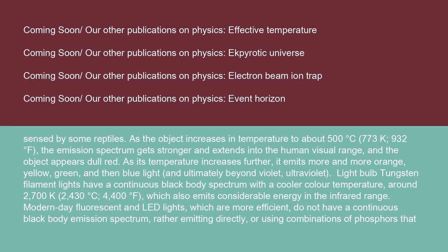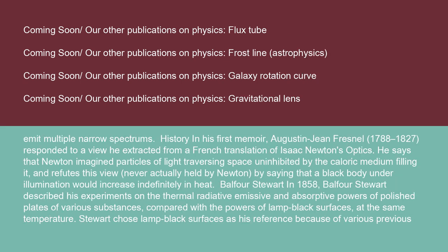As its temperature increases further, it emits more and more orange, yellow, green, and then blue light, and ultimately beyond violet — ultraviolet. Light bulb tungsten filament lights have a continuous blackbody spectrum with a cooler color temperature around 2,700 K (2,430°C / 1,400°F), which also emits considerable energy in the infrared range. Modern-day fluorescent and LED lights, which are more efficient, do not have a continuous blackbody emission spectrum; rather, they emit directly or use combinations of phosphors that emit multiple narrow spectrums.